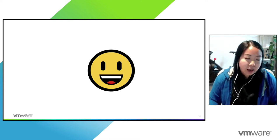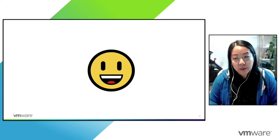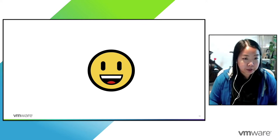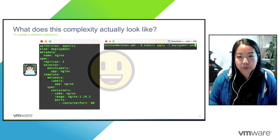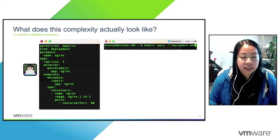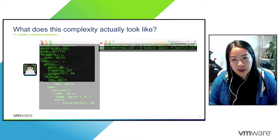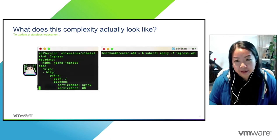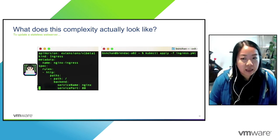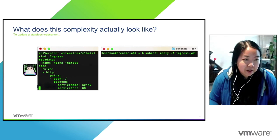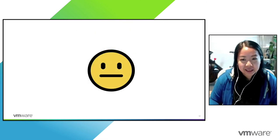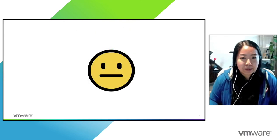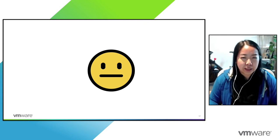But let's do this again. You may need to update something — maybe the image changed, the port changed. So you go through the same thing again: you update your deployment YAML and kubectl apply. You may update the service and kubectl apply. Update the ingress and kubectl apply. The maintenance of the sprawling YAML files is really annoying.